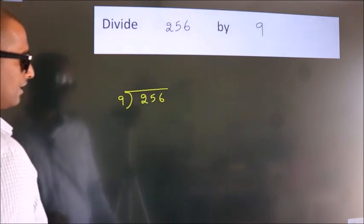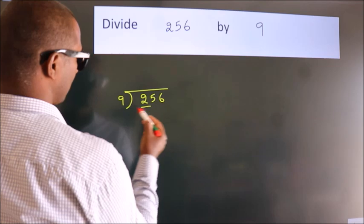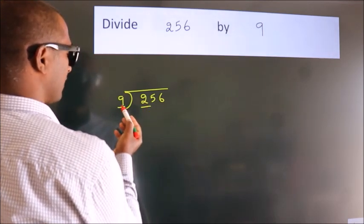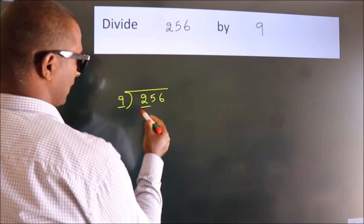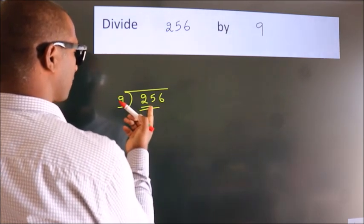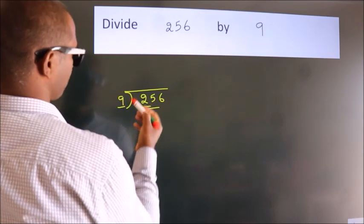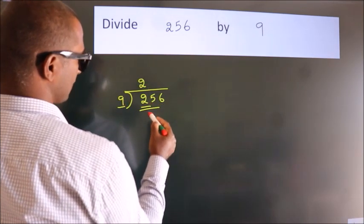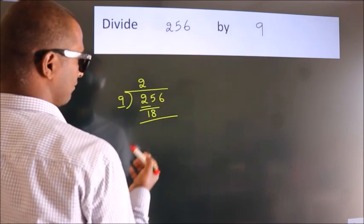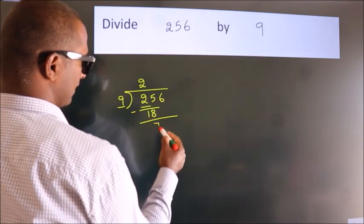Next, here we have 2, here 9. 2 is smaller than 9, so we should take 2 numbers, 25. A number close to 25 in the 9 table is 9 times 2 equals 18. Now we should subtract. We get 7.